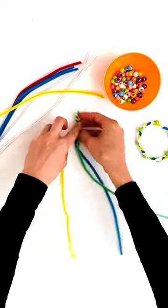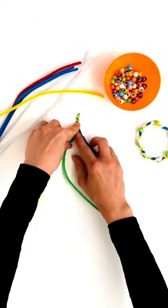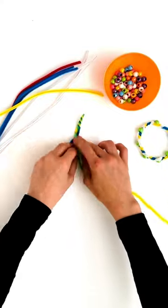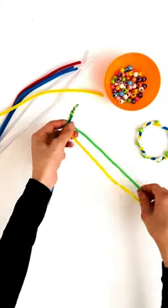Take three different colored pipe cleaners and twist the ends. Then start plaiting the pipe cleaners and once you've done a few plaits, thread a bead on.